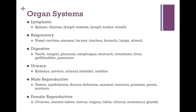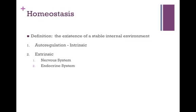There's also the lymphatic, respiratory, digestive, urinary, and male and female reproductive systems. For homeostasis, make sure you understand the scientific definition, which is the existence of a stable internal environment. Autoregulation is intrinsic — that means it happens automatically, like blood vessels dilating. Extrinsic regulation is not automatic; it requires the nervous system or the endocrine system to give a command in order for homeostatic regulation to occur.